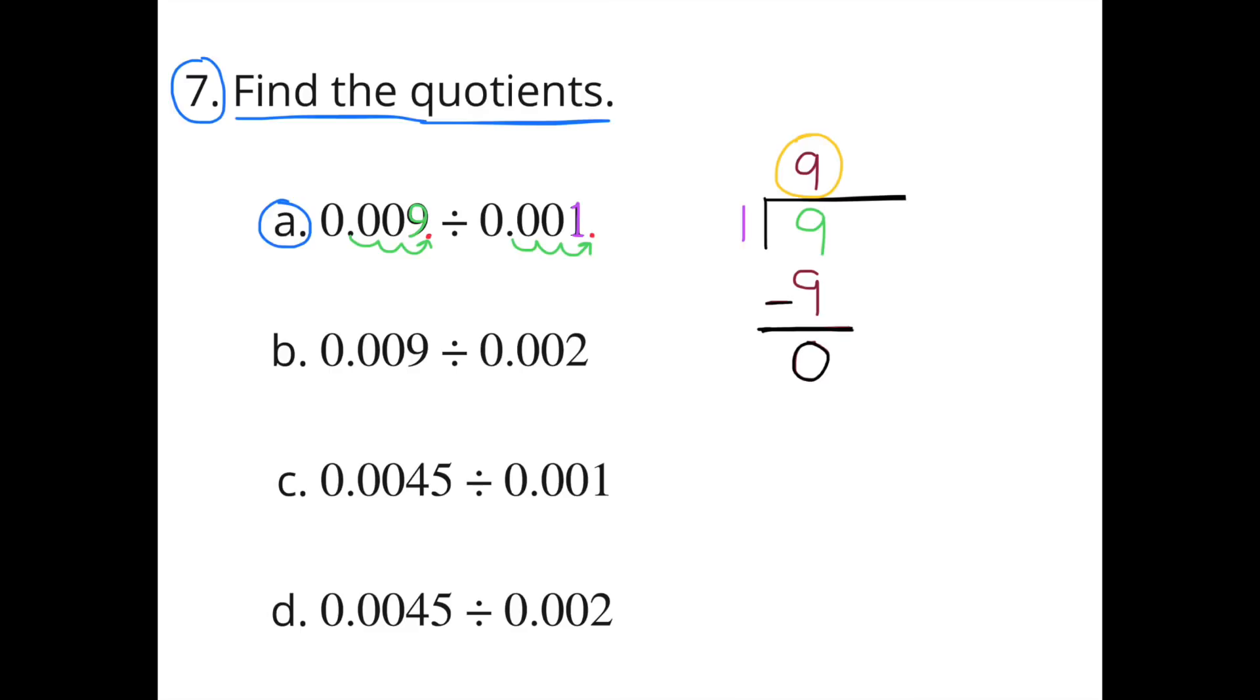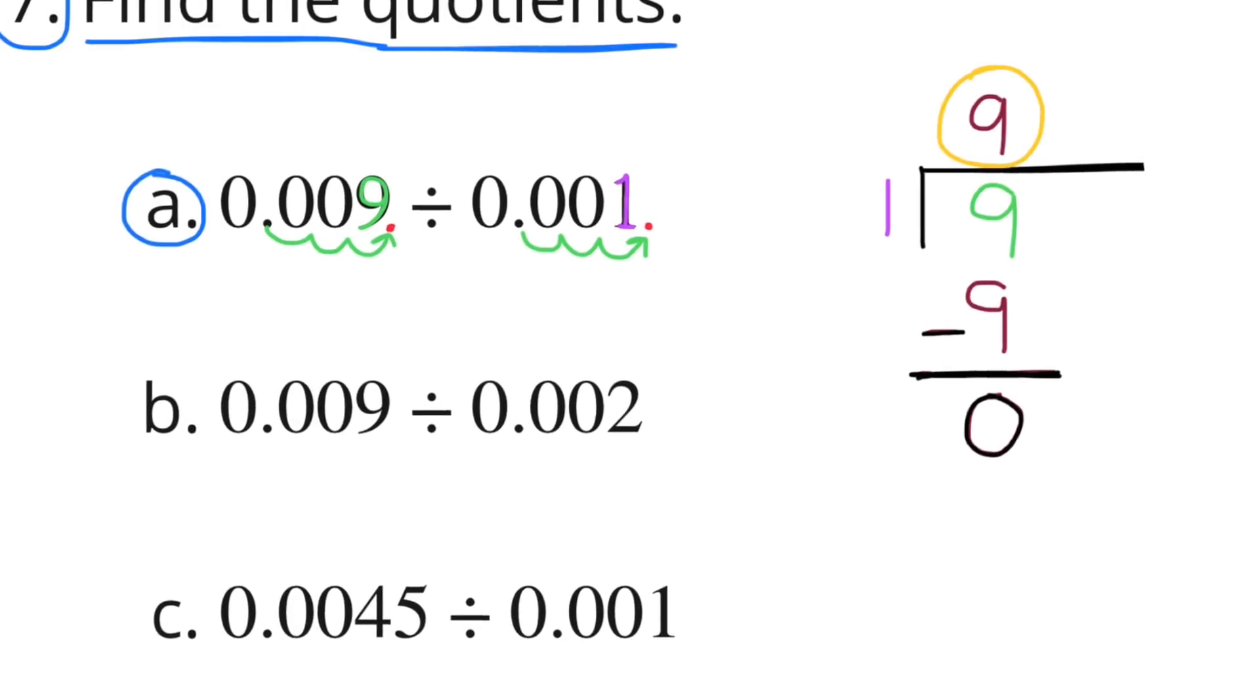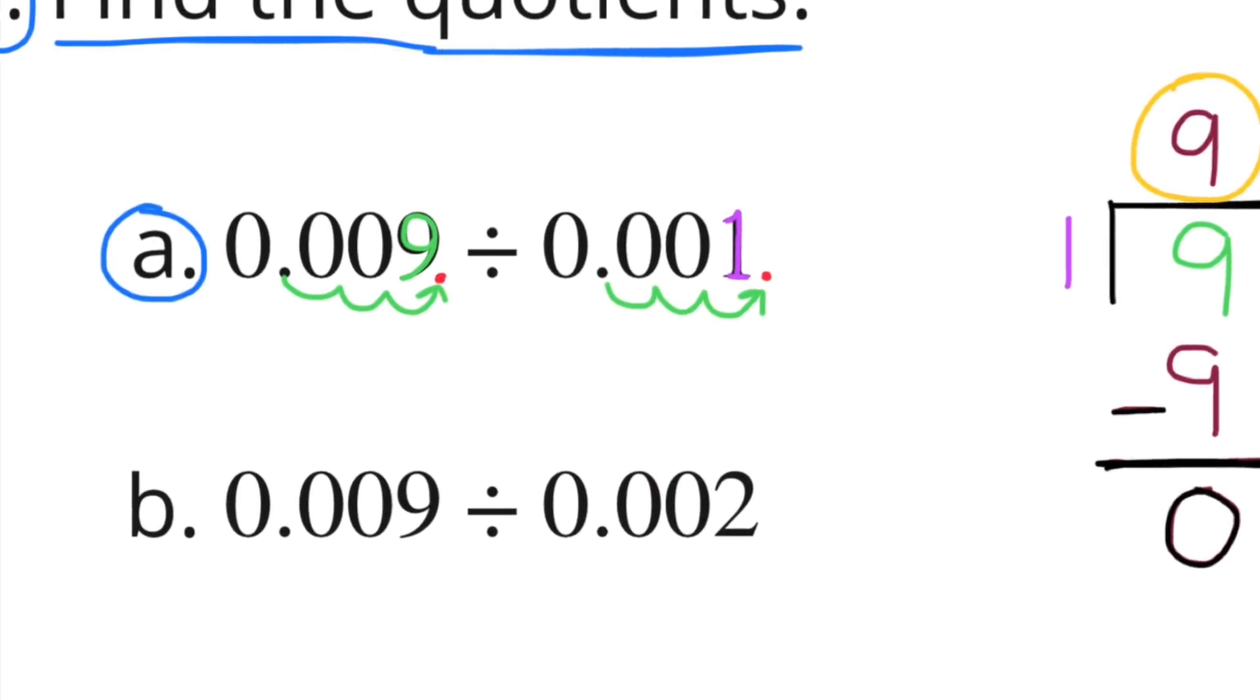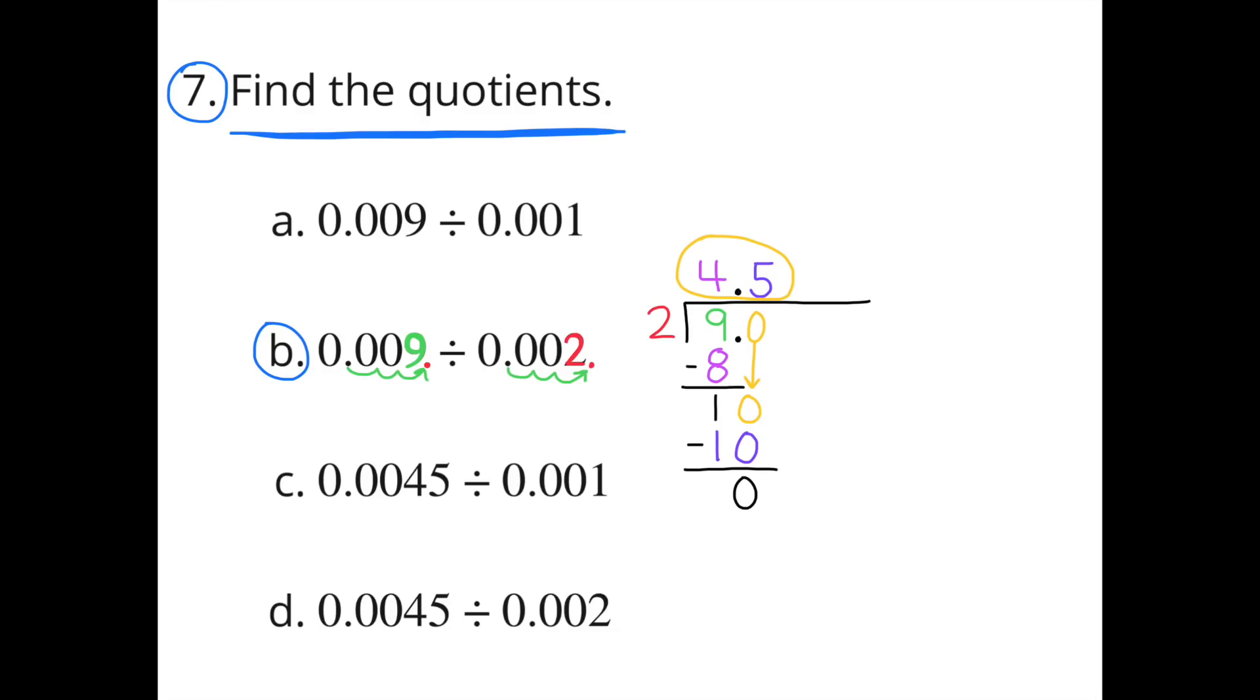Number 7: Find the quotients. The strategy here is to turn these decimals into whole numbers. Part A: 9 thousandths divided by 1 thousandth. That's the same as 9 divided by 1, and 9 divided by 1 is 9. I turned them into whole numbers by making the 9 thousandths a thousand times bigger, moving the decimal point three places to the right. I also did that to the 1 thousandth. Part B: 9 thousandths divided by 2 thousandths. I used the same strategy, making both numbers a thousand times greater. So I have 9 divided by 2, which equals 4 and 5 tenths.